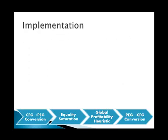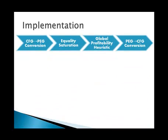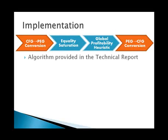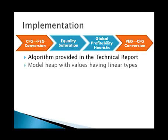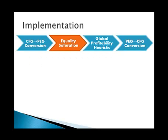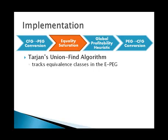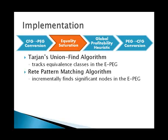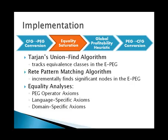A major challenge of our approach lies in its implementation, which we overview stage by stage. To model languages with mutable heaps such as Java, we make the heap an explicit value and use linear types to constrain its use. For equality saturation, we use Tarjan's union-find algorithm to track the equivalence classes in the EPEG. We use the RETE pattern matching algorithm from the AI community to incrementally process the EPEG for PEG nodes significant to the various equality analyses. We use a variety of equality analyses: axioms about PEG operators, axioms for language-specific items such as integers, arrays, invocation, and heaps, and we can easily extend our framework with domain-specific axioms such as vector algebra, immutability information, and implicit contracts.